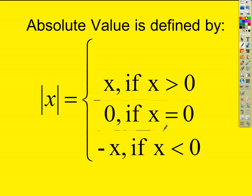Look at this piecewise function. When x is positive, the function gives absolute value of x equals x — it equals itself. If the number is already positive inside the absolute value bars, the answer is just x. If x is less than zero, we multiply by negative one to make it positive. And if x equals zero, the absolute value of zero is zero.